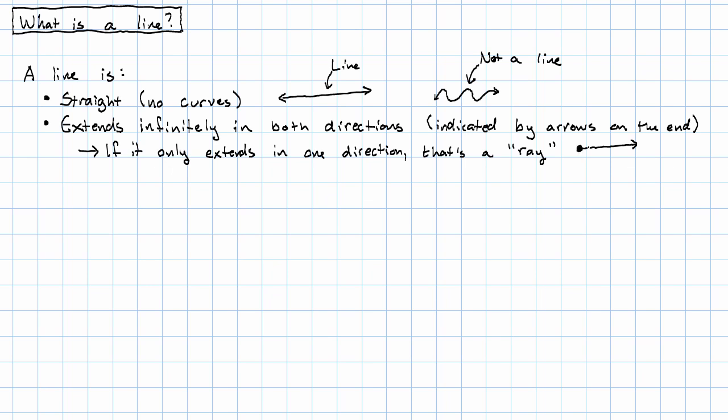So a ray has an endpoint at one end and then extends infinitely in one direction. If it doesn't extend in either direction, that's a line segment.